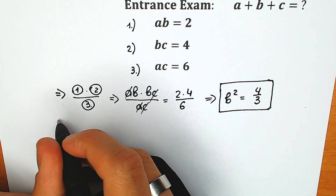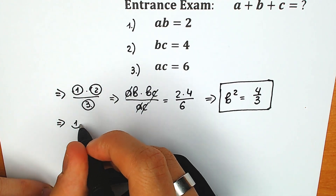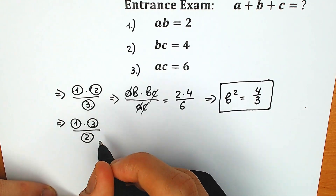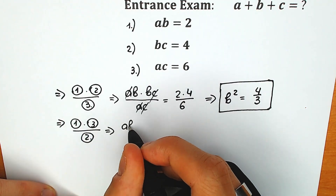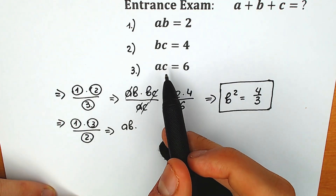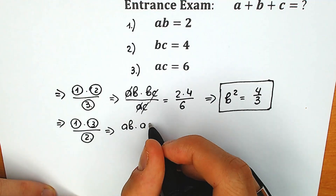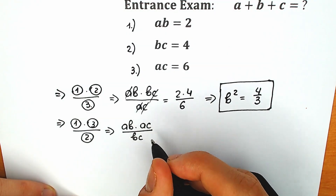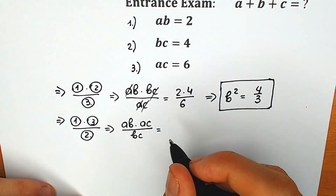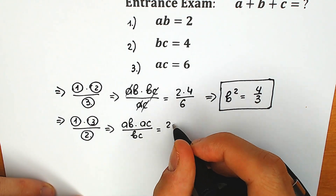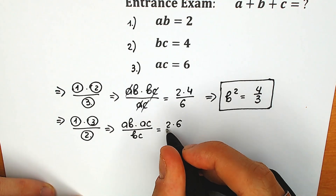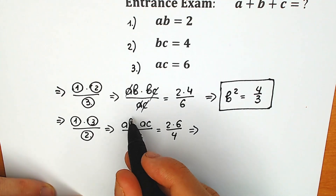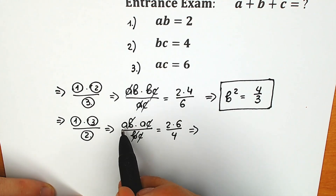For the second step, let's use a different combination. Let's multiply the first equation by the third equation, and divide by the second equation. So we have ab times ac, divided by bc. We can easily cancel our b and cancel our c, and we have only a squared.